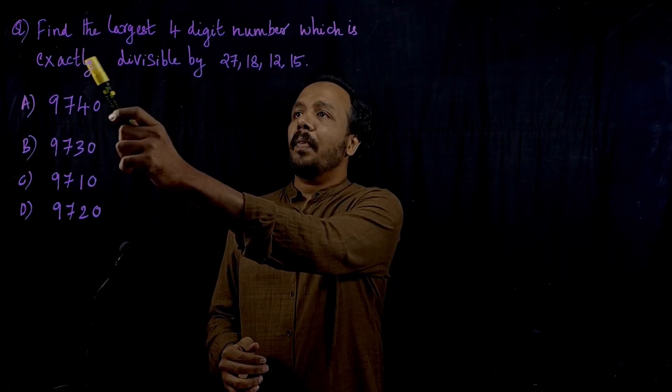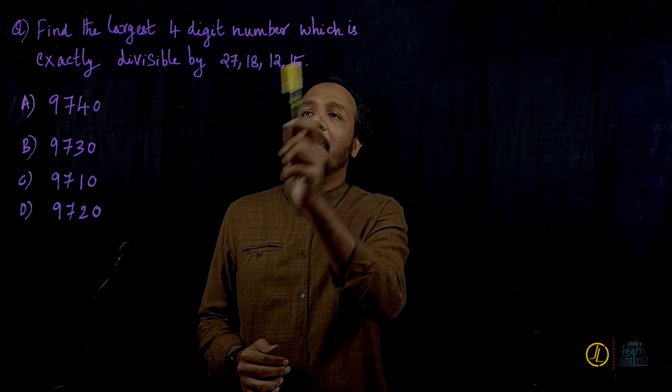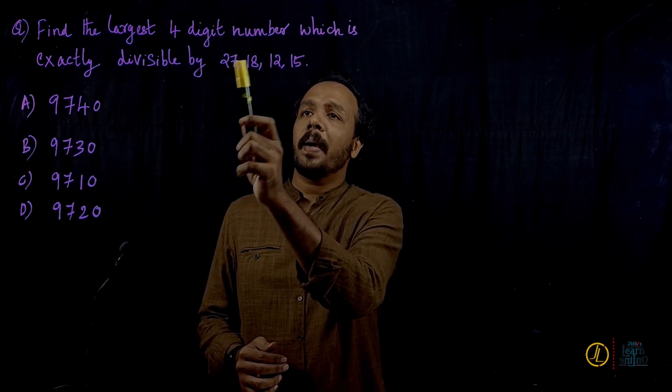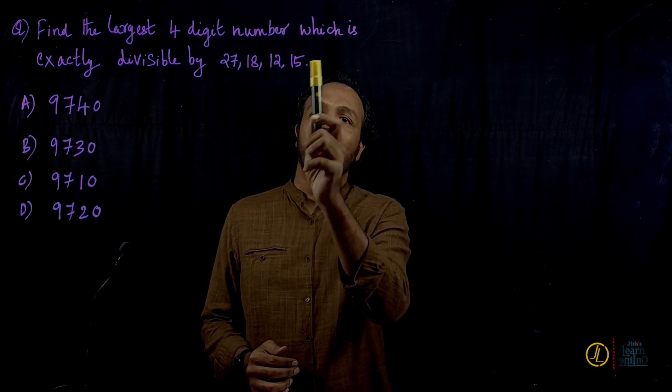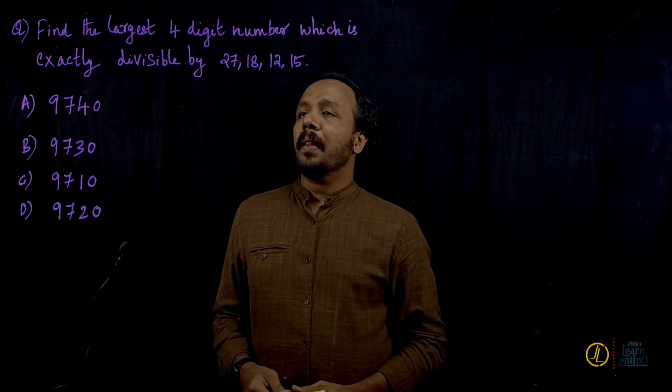The next question is to find the largest 4-digit number which is exactly divisible by 27, 18, 12, and 15. How do we solve it?